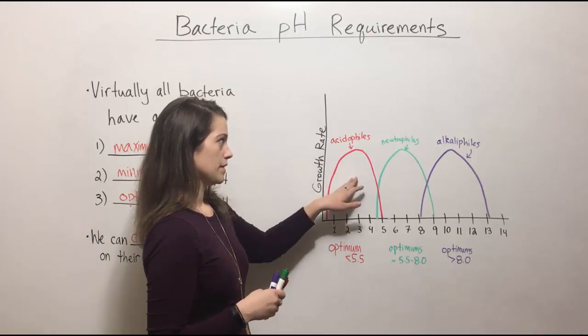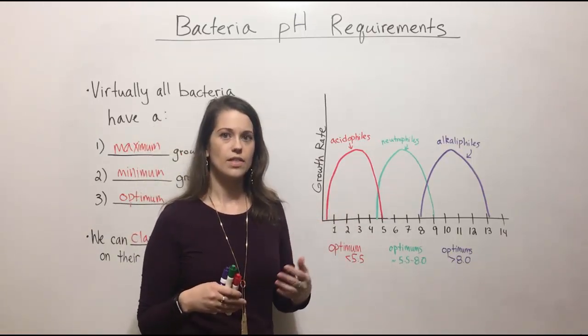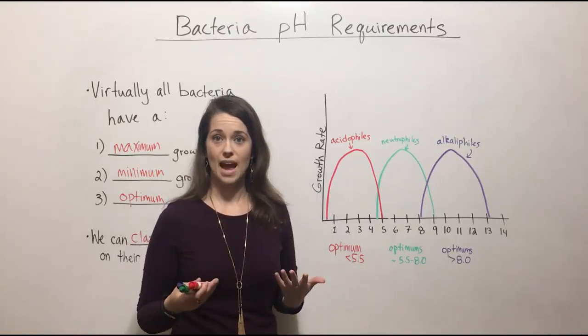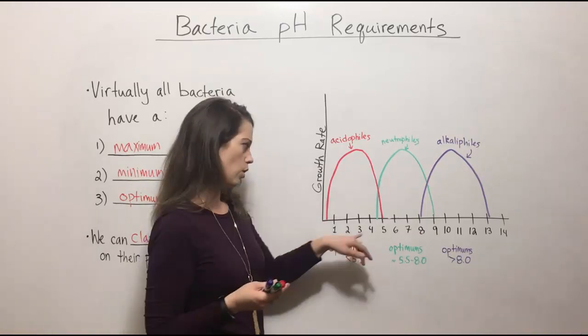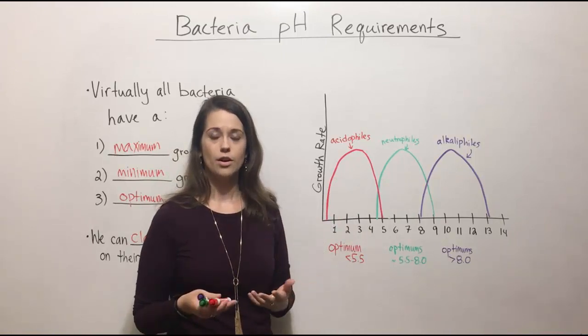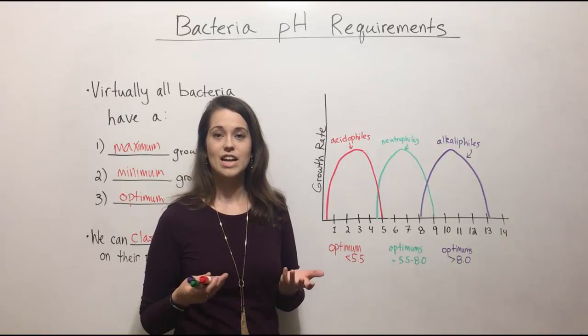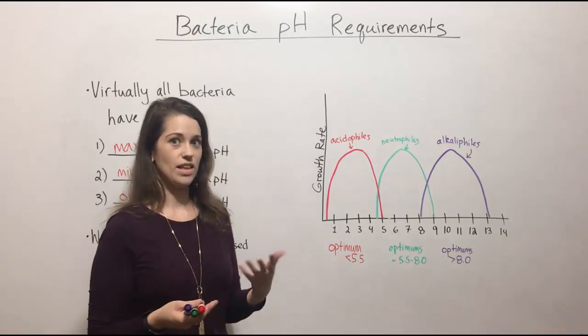Some other examples of acidophiles are lactobacilli. Lactobacilli are bacteria that live in the female vagina and actually create and produce lactic acid, lowering the pH of the vagina to about 4. And this actually means that they can grow very well, but a lot of other pathogenic bacteria and certain kinds of pathogenic yeasts cannot grow at that low pH and thus that protects women from having things like yeast infections.